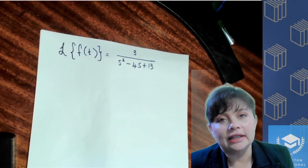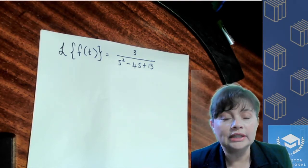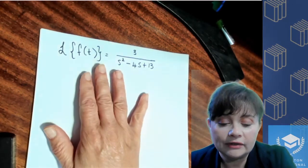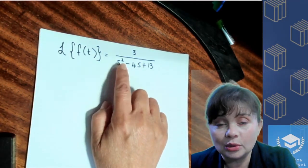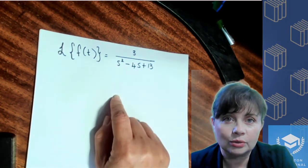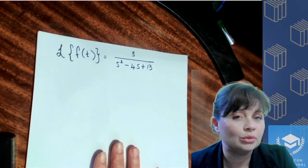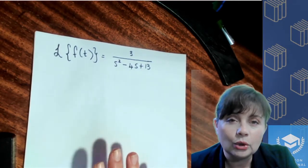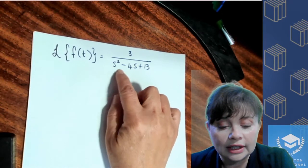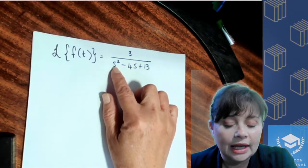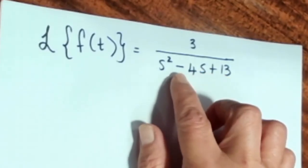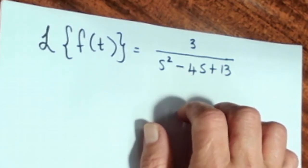Remember that when we find the inverse Laplace transform, we are wanting to go from the frequency or the s-domain into the time domain. So here we have a function that is in terms of s, which means we are in our frequency domain. We always need to have a strategy when we're trying to do this, and what we're going to do is start at the denominator and look for the form of this denominator and compare it to the forms on the table that we've got.